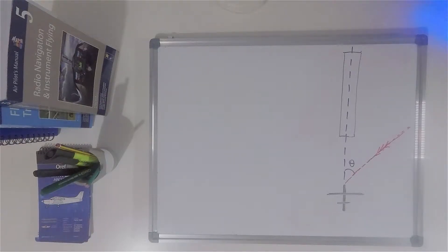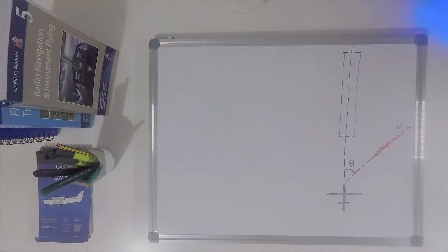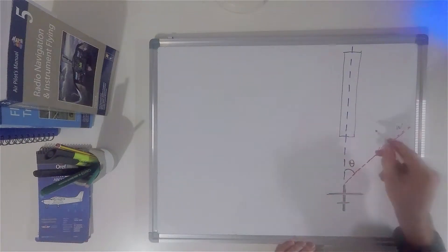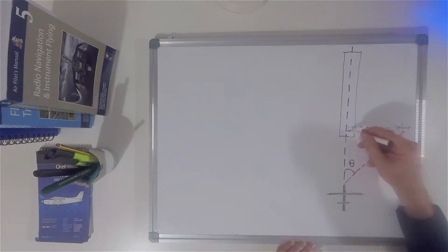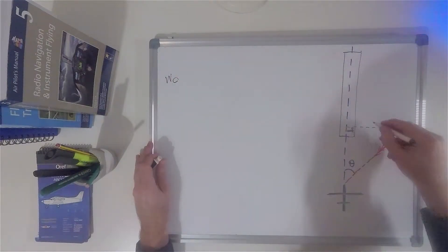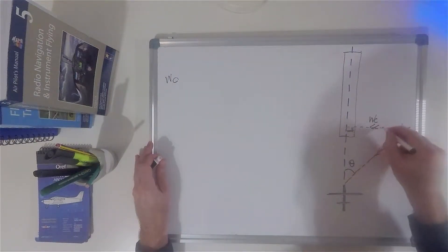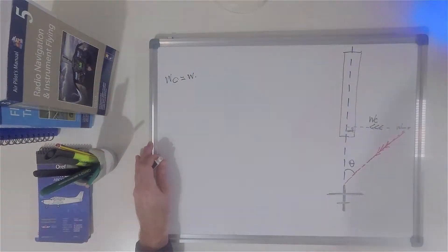The first method of calculation, which is the most precise, is a method that involves trigonometry. So let's say that if theta is the angle between our track and the wind direction, and W is the wind speed, from trigonometry we have that the crosswind component — if we form that triangle — will be the wind speed multiplied by sine of theta.